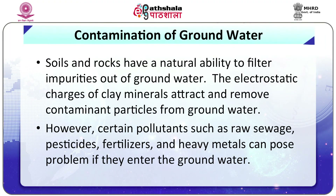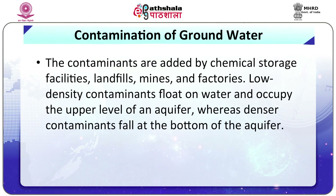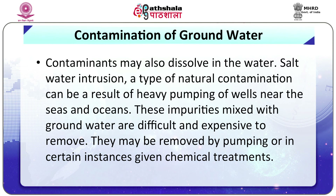Soils and rocks have a natural ability to filter impurities out of groundwater. The electrostatic charges of clay minerals attract and remove contaminant particles. However, certain pollutants such as raw sewage, pesticides, fertilizers and heavy metals can pose problems if they enter the groundwater. Contaminants are added by chemical storage facilities, landfills, mines and factories. Low-density contaminants float on water and occupy the upper level of an aquifer, whereas denser contaminants fall to the bottom. Contaminants may also dissolve in the water. Saltwater intrusion, a type of natural contamination, can result from heavy pumping of wells near seas and oceans. These impurities mixed with groundwater are difficult and expensive to remove, and may be addressed by pumping or chemical treatments.